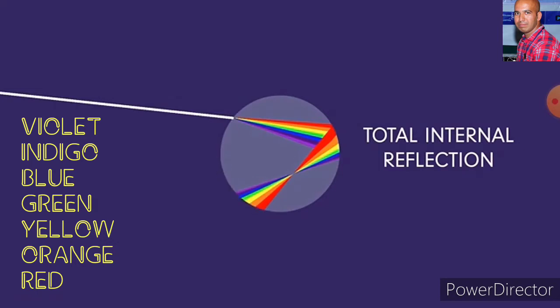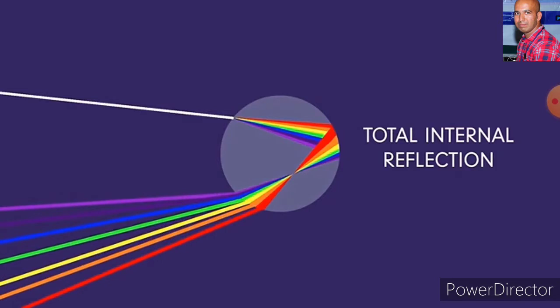After the first refraction, the light rays undergo total internal reflection and reflect back into the water drop. They then refract again into the air.